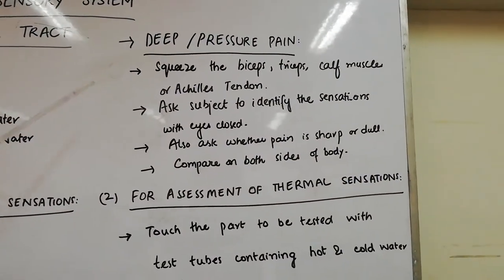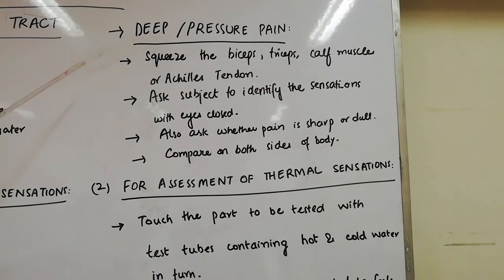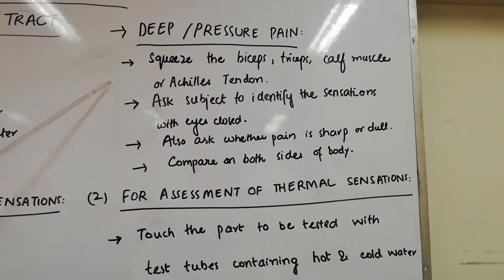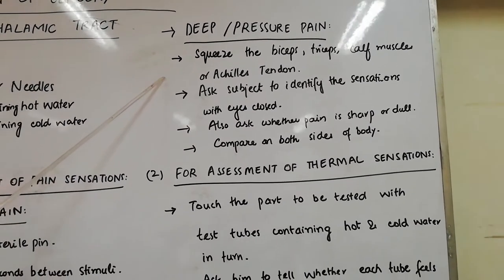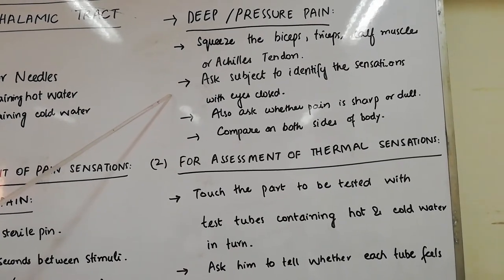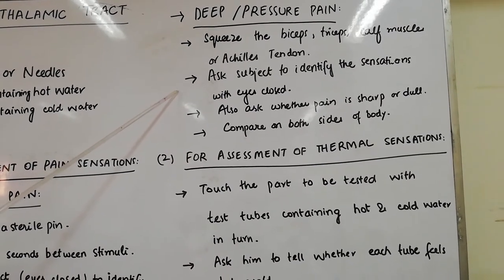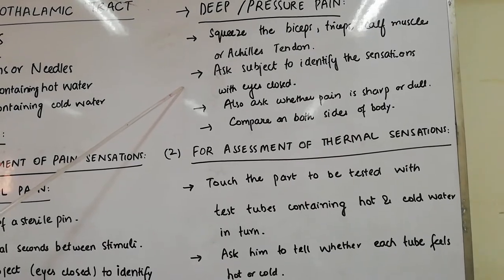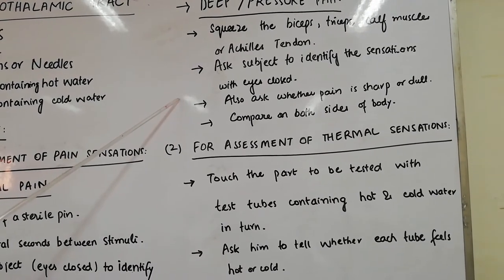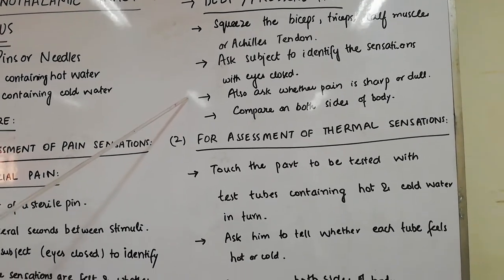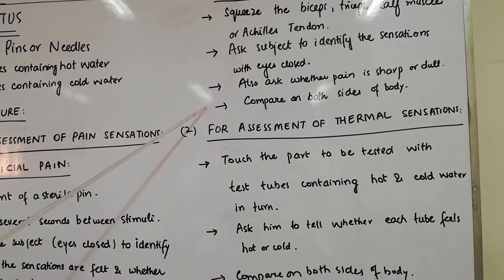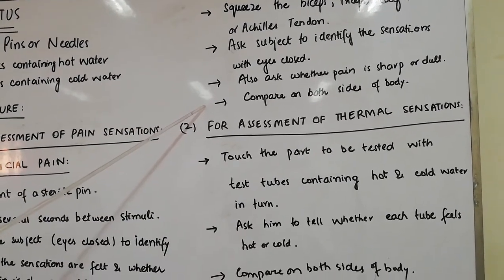For assessment of deep or pressure pain, squeeze the biceps, triceps, or calf muscles or Achilles tendon. Ask the subject to identify the sensations with eyes closed, and whether the pain felt is sharp or dull. Compare this on both sides of the body.